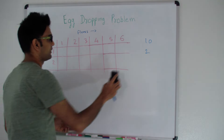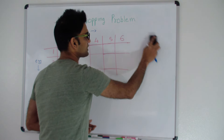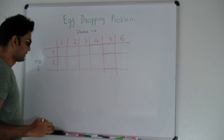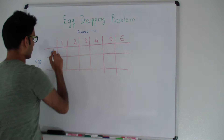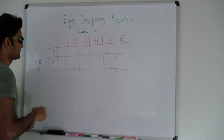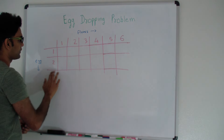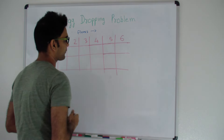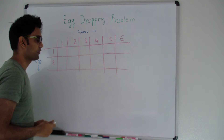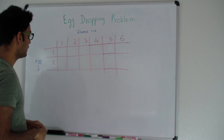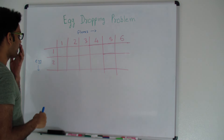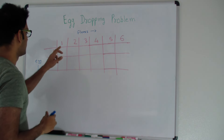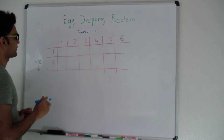We're going to use dynamic programming to solve this. I'm assuming 6 floors and 2 eggs, and I'm going to solve this matrix. At the bottom right corner I'm going to have my final answer. Let's start with the top left corner.